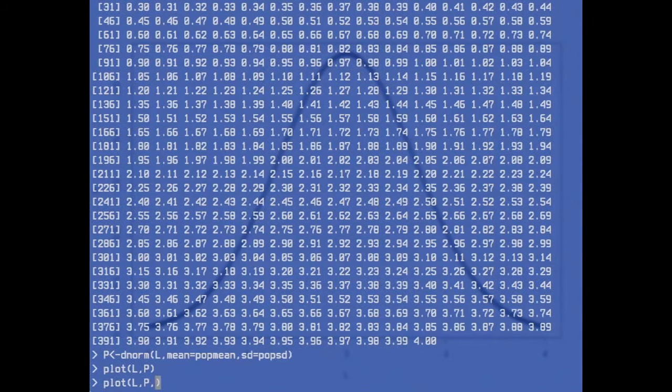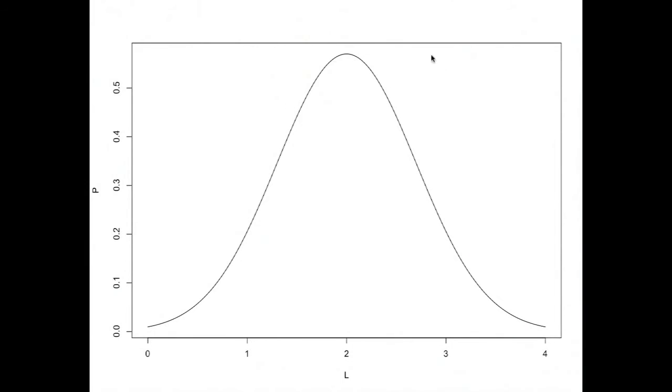If I want a line, I can change the type to L for a line. So here you have a nice line with 2 liters as the mean and standard deviation of 0.7. You don't actually see the standard deviation in this plot.